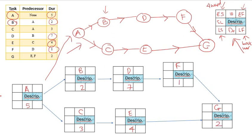So now it's time to calculate the forward pass. We're going to start with node A. The ES is always 0 since it's the starting of everything, so the early start is 0. So the EF is just simply 0 plus 5, which is the ES plus the duration. You will get 5.